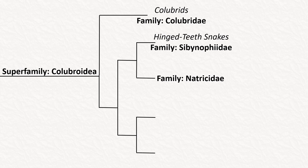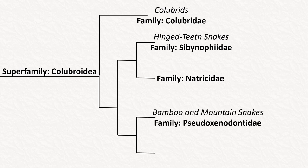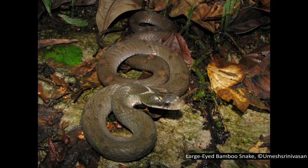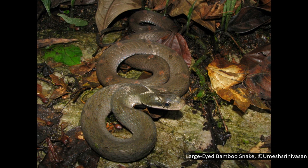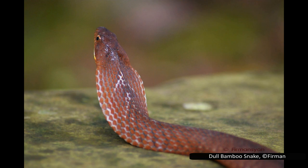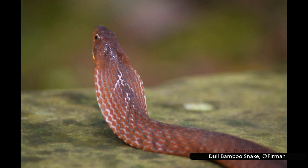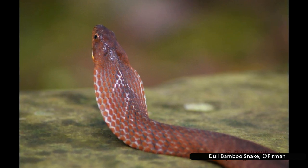The next family, Pseudoxenodontidae, is often considered one of the most poorly known groups of snakes. They have various common names including the bamboo snakes, false cobras, and mountain snakes. There are 10 species between two genera, found in South and Southeast Asia, with different species eating earthworms or amphibians and lizards. No human bites are known, so it is not known if they are venomous or not. At least two species have a threat display where they flash banded colouration, spread a hood, and can even play dead — the hood being the reason they are sometimes known as the false cobras.